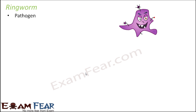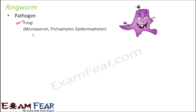The causal pathogen of ringworm is a fungi. There are many different types of fungi which can cause ringworm, like Microsporum, Trichophyton, and Epidermophyton. These are some of the classes of fungi which cause ringworm.